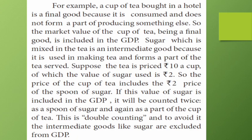If you want to calculate GDP, you only count the final good — the tea at 10 rupees. If you were to add the intermediate goods separately, for example adding 10 plus 2, you would be double-counting. That is why we only use the final goods price, which already includes the cost of all intermediate inputs, to avoid inflating the GDP calculation.